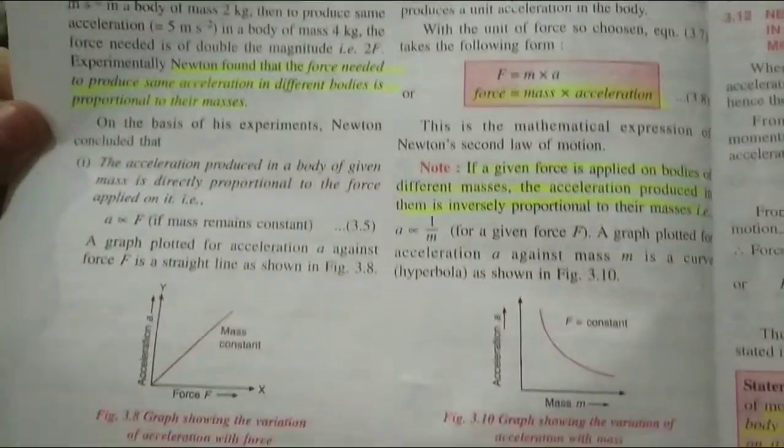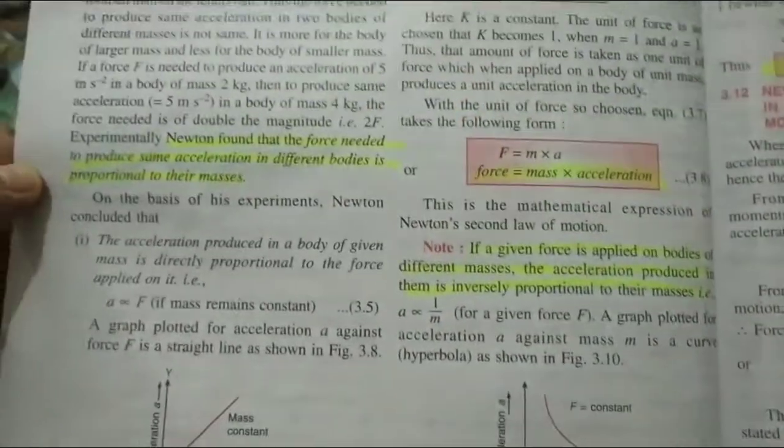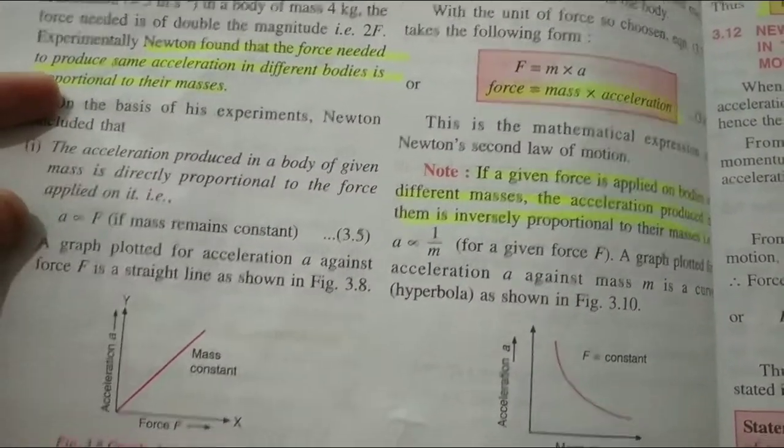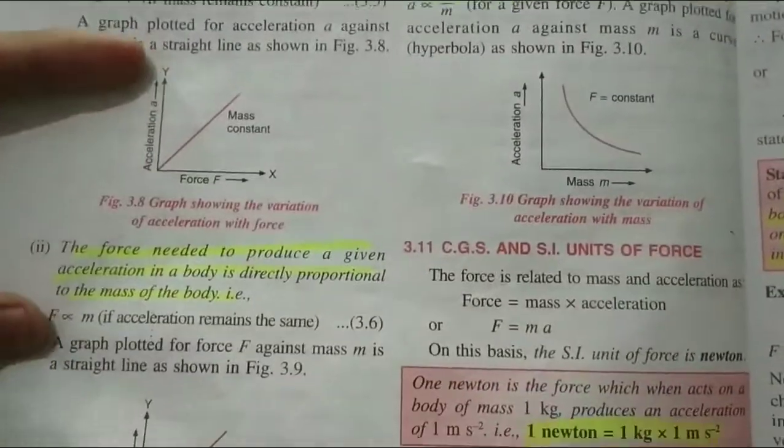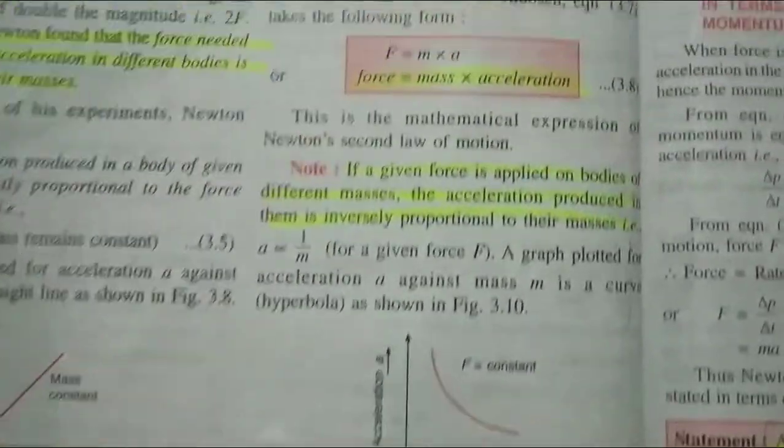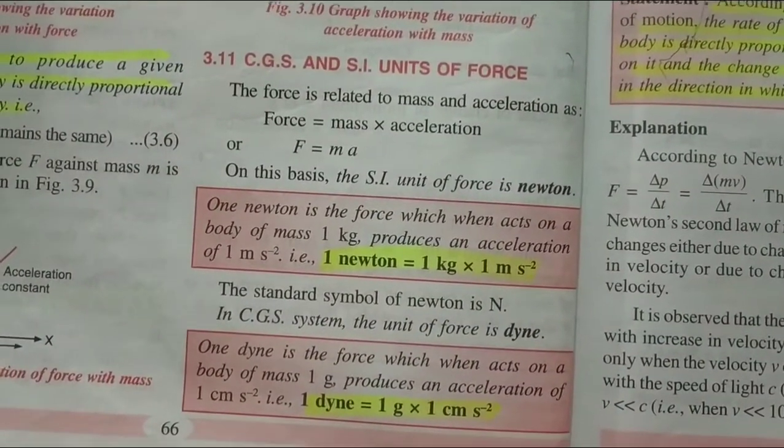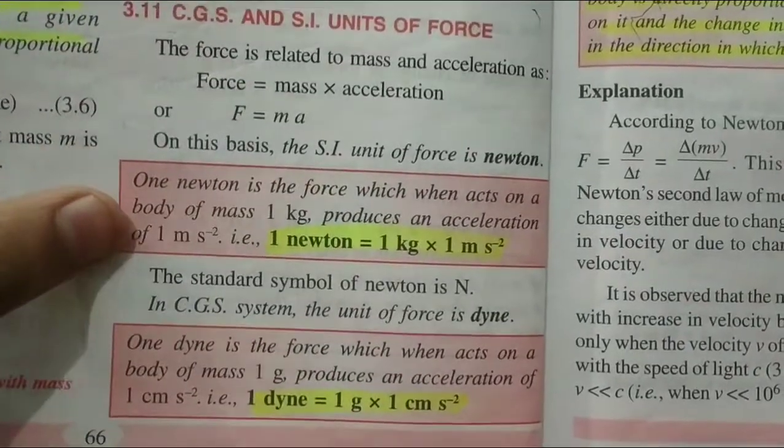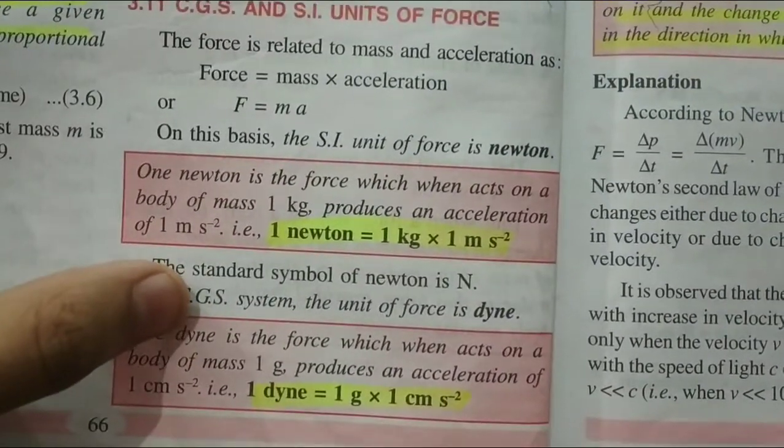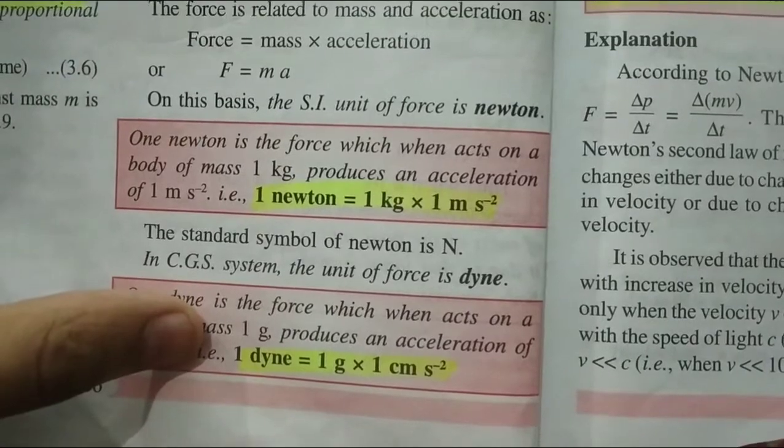The more force is here, acceleration produced in the body of given mass is directly proportional to force. The more force, the more acceleration. The more mass, the more force. Now CGS unit is a unit of force. Force is measured in newton. One newton is equal to one kg into one m/s squared. And in CGS system the unit is dyne. One dyne is equal to one gram into one centimeter per second squared. This is also very important.